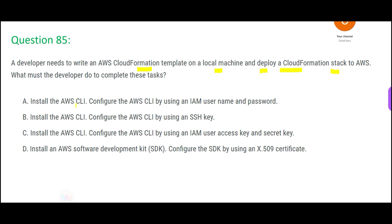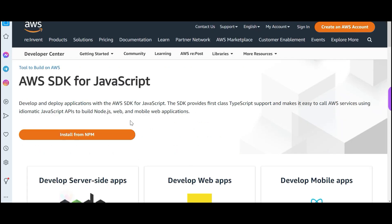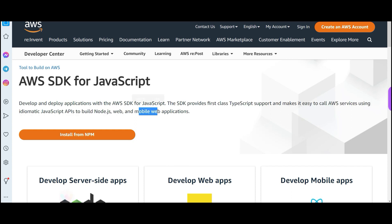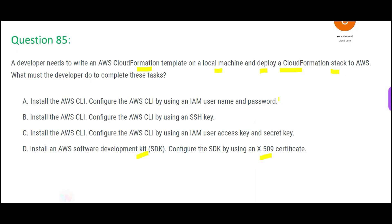One thing is sure — this is possible through CLI. We do not need the SDK for this purpose. Also, x509 is a public key infrastructure standard used with certificates. The SDK, for example the SDK for JavaScript, is used to deploy applications like mobile, web apps, or APIs. This question is about deploying CloudFormation stacks, not applications, so we will exclude option D — it is wrong.